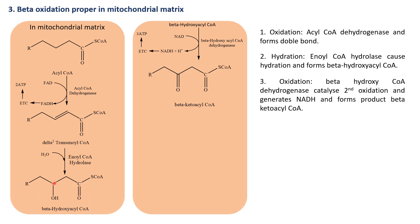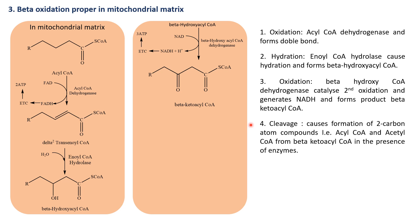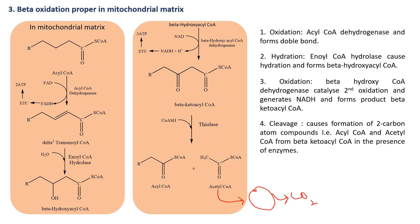The formed beta-keto acyl coenzyme A undergoes a cleavage reaction in the presence of the enzyme thiolase. Here, coenzyme A (CoASH) is added, resulting in the formation of acyl coenzyme A and acetyl coenzyme A. The acyl coenzyme A re-enters the beta oxidation cycle, while the formed acetyl coenzyme A enters the Krebs cycle.